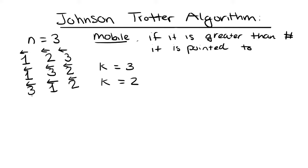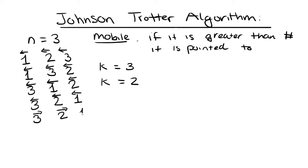Now for 3, 1, 2: checking mobile numbers — 2 points to 1, so 2 is a mobile number. 1 is not mobile, and 3 is not pointing to anything. So we go to k equals 2 and switch it. Remember, we also need to flip the arrows of all numbers greater than k, so since 3 is greater than 2, we flip 3's arrow.